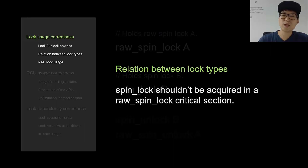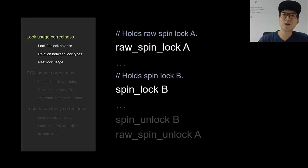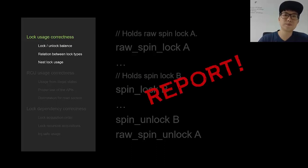Spinlock shouldn't be acquired inside a raw spinlock critical section, which is similar to the previous case. This code tried to acquire spinlock B with raw spinlock A held, which is problematic, so LockDev reports it as a problem.